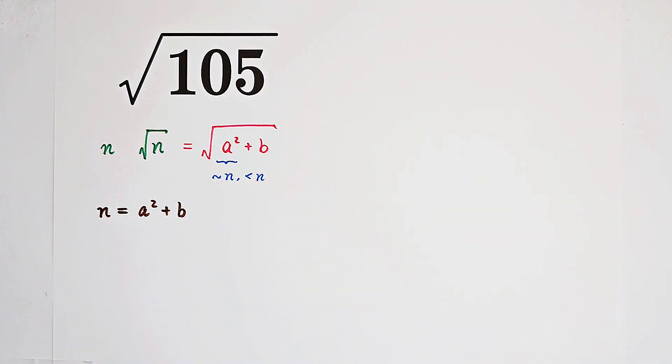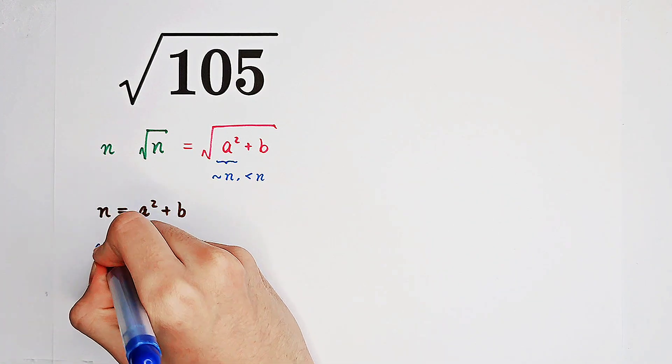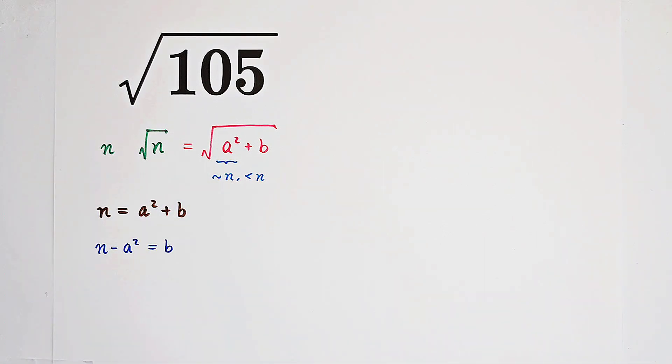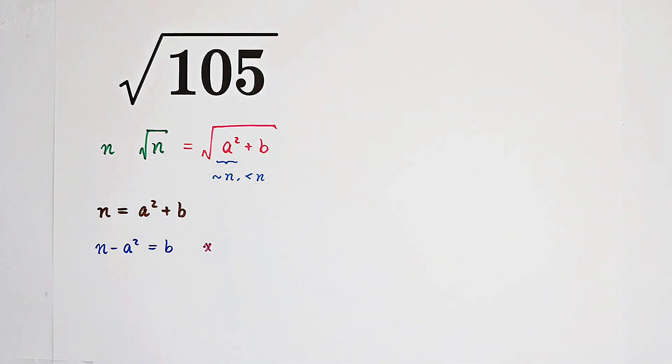n is a squared plus b! So what I'm doing next is to bring the a squared to the left side, and we have n minus a squared equals b. Now, what I'm gonna do is using a formula. Which formula? That is x squared, oh my god, I have to change a pen.